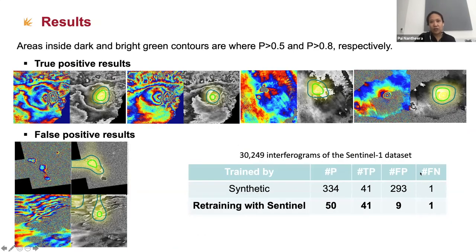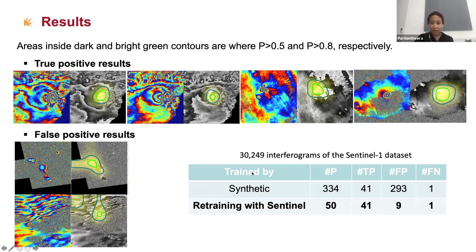Now I show you some results. Each plot shows an interferogram with its probability map — the brighter yellow indicates higher probability of being deformation. There are some false positives, like strong atmosphere signals. We fed these back to retrain the network and found it significantly reduces the number of false positives, because now the network has learned the characteristics of Sentinel-1 data. However, there is still one false positive we missed here.